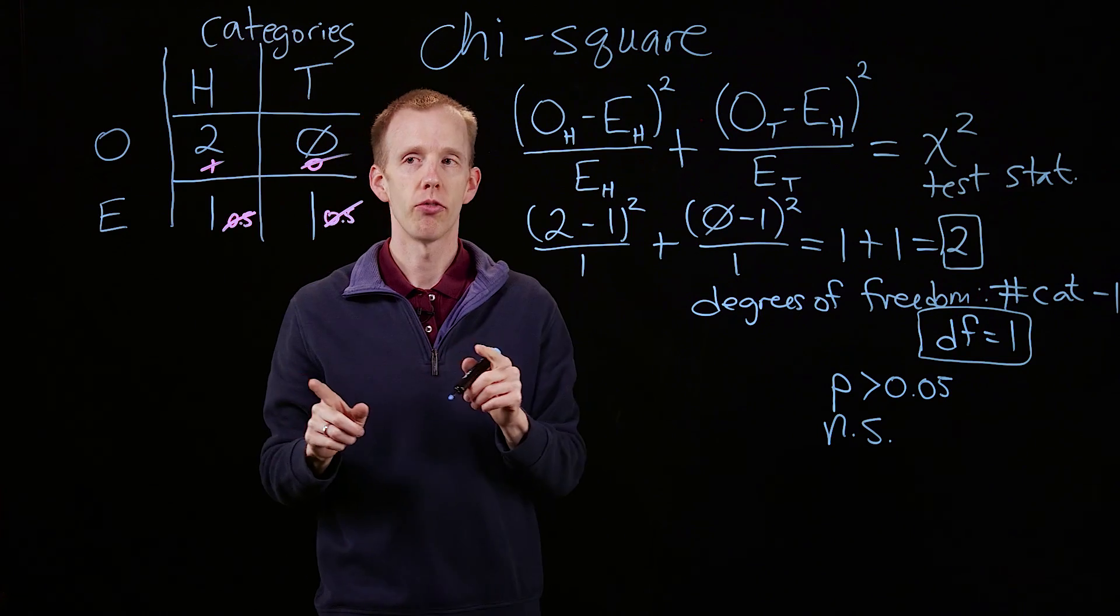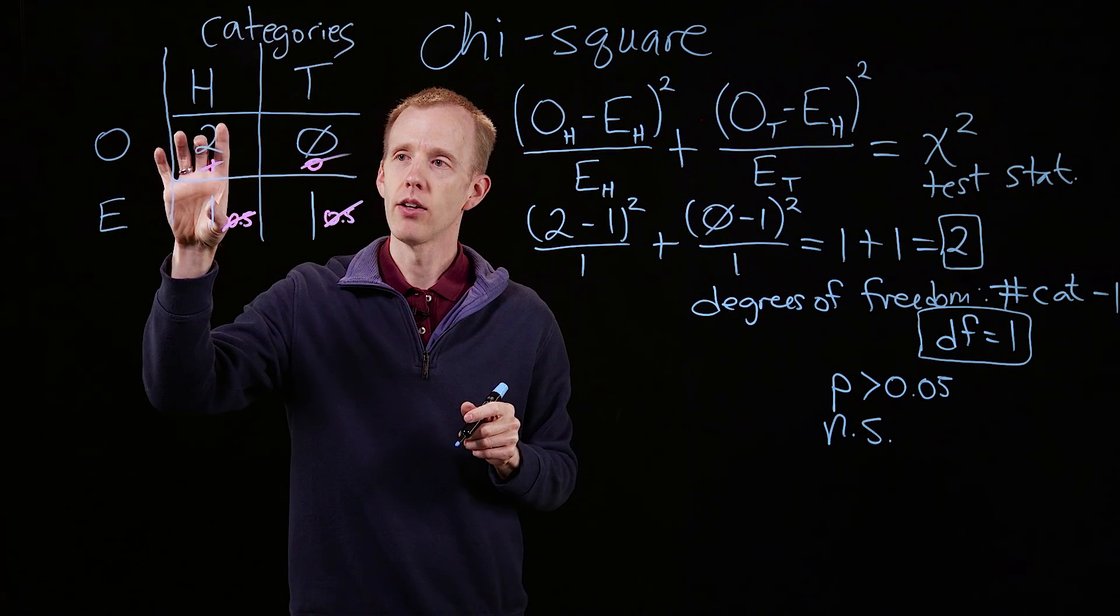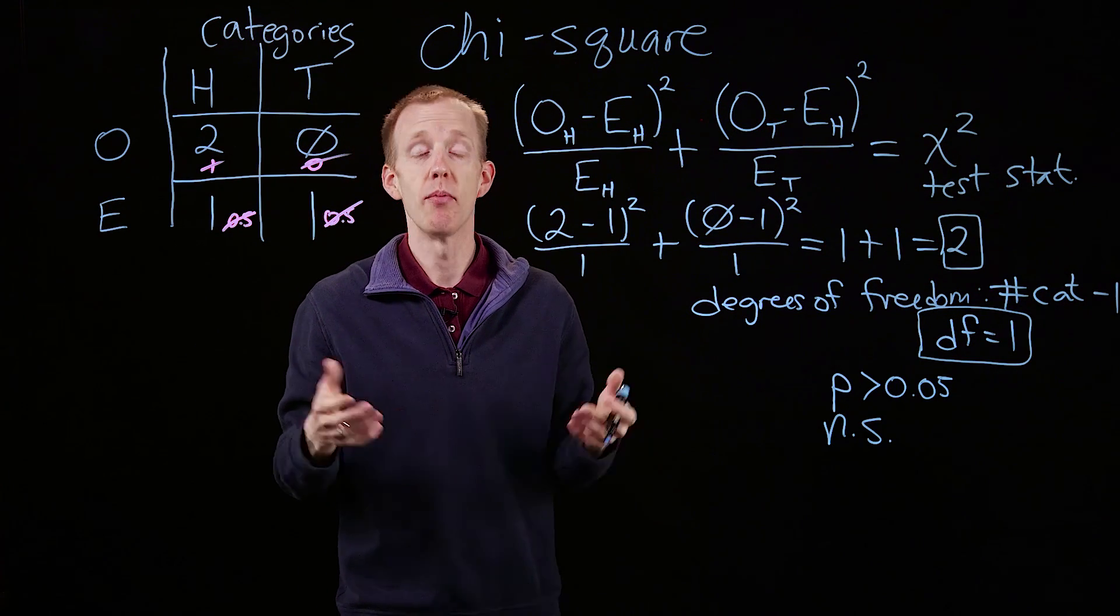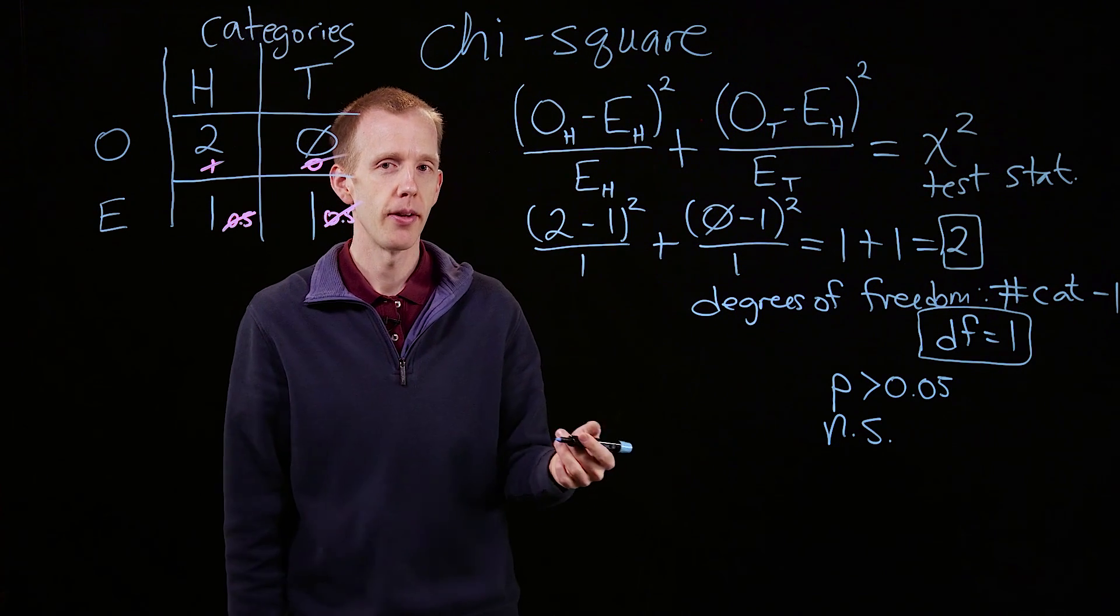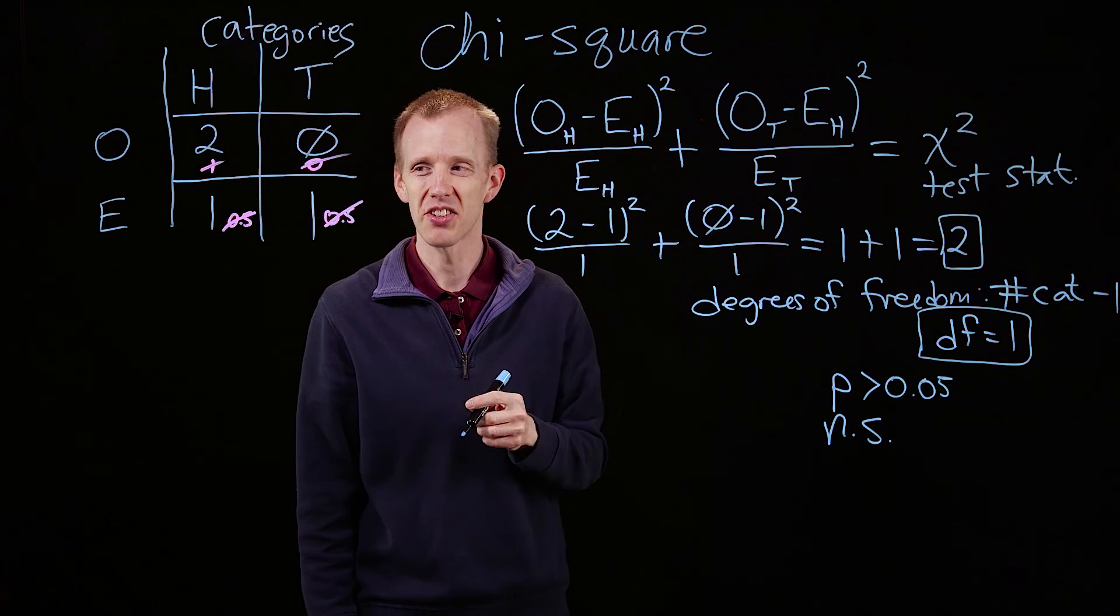p greater than 0.05 means that it's very likely that we never saw tails just by chance. And if we flipped the coin a third time, we would probably see tails. If we kept flipping the coin, we would definitely see tails, as long as that coin has a tails side.